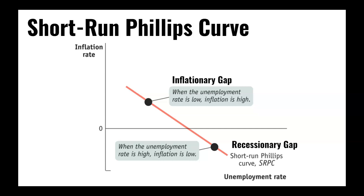When drawing the short-run Phillips Curve, the axes are inflation rate on the vertical — which should make sense because in the AD-AS model, the vertical axis had to do with price level, so anything related to changes in price level stays on the vertical. The horizontal axis has unemployment rate for the short-run Phillips Curve, which again makes sense because as output changes, we can see changes in the unemployment rate. So the axes are connected between the AD-AS graph and the Phillips Curve.